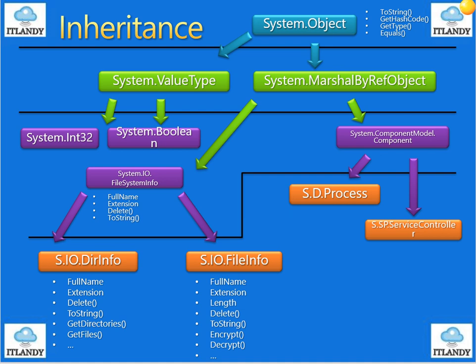You can see system.ValueType, system.Int32, and system.Boolean, and system input or output will be defined by the full name, extension, and toString. Also, you can see the file name and directory info as well.